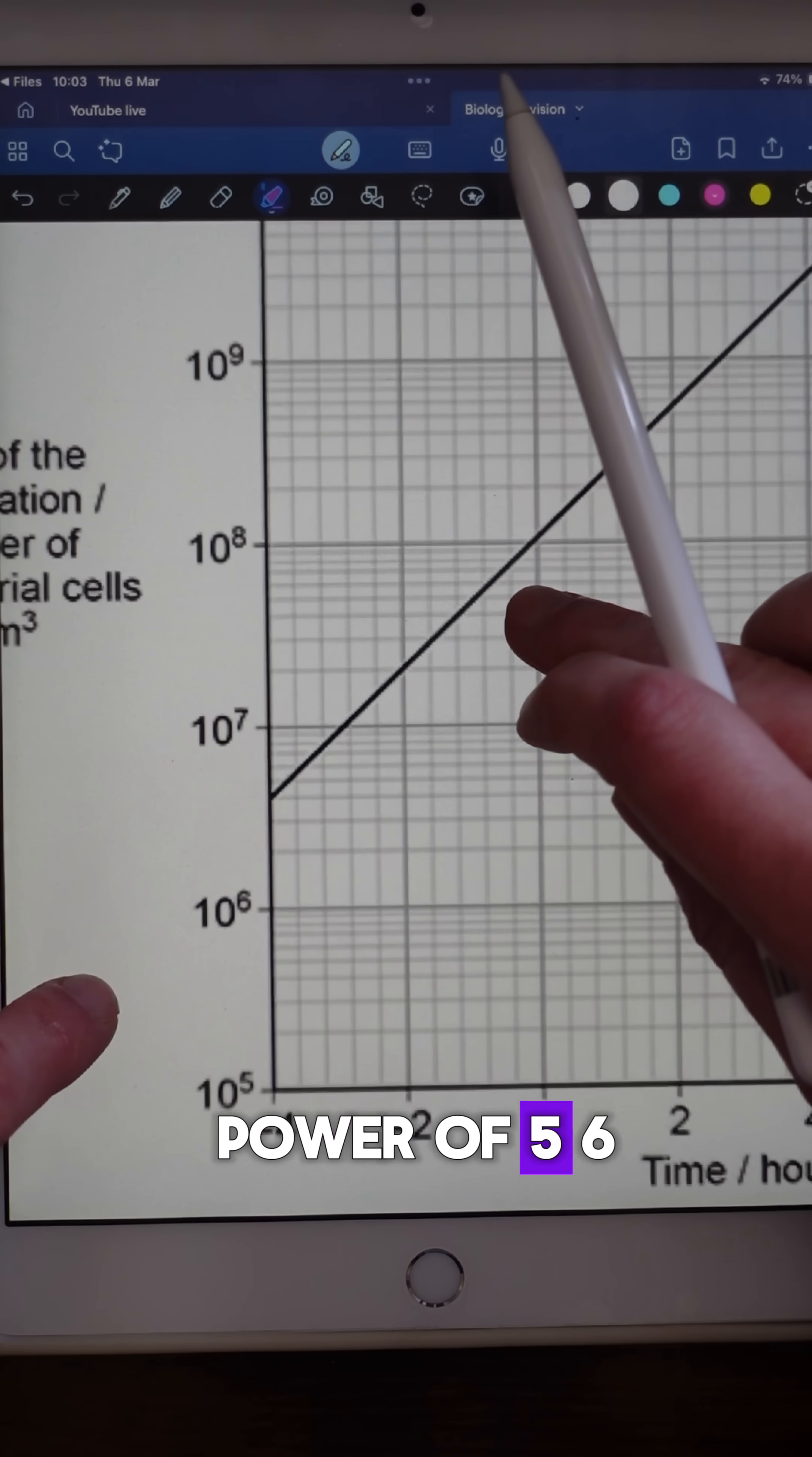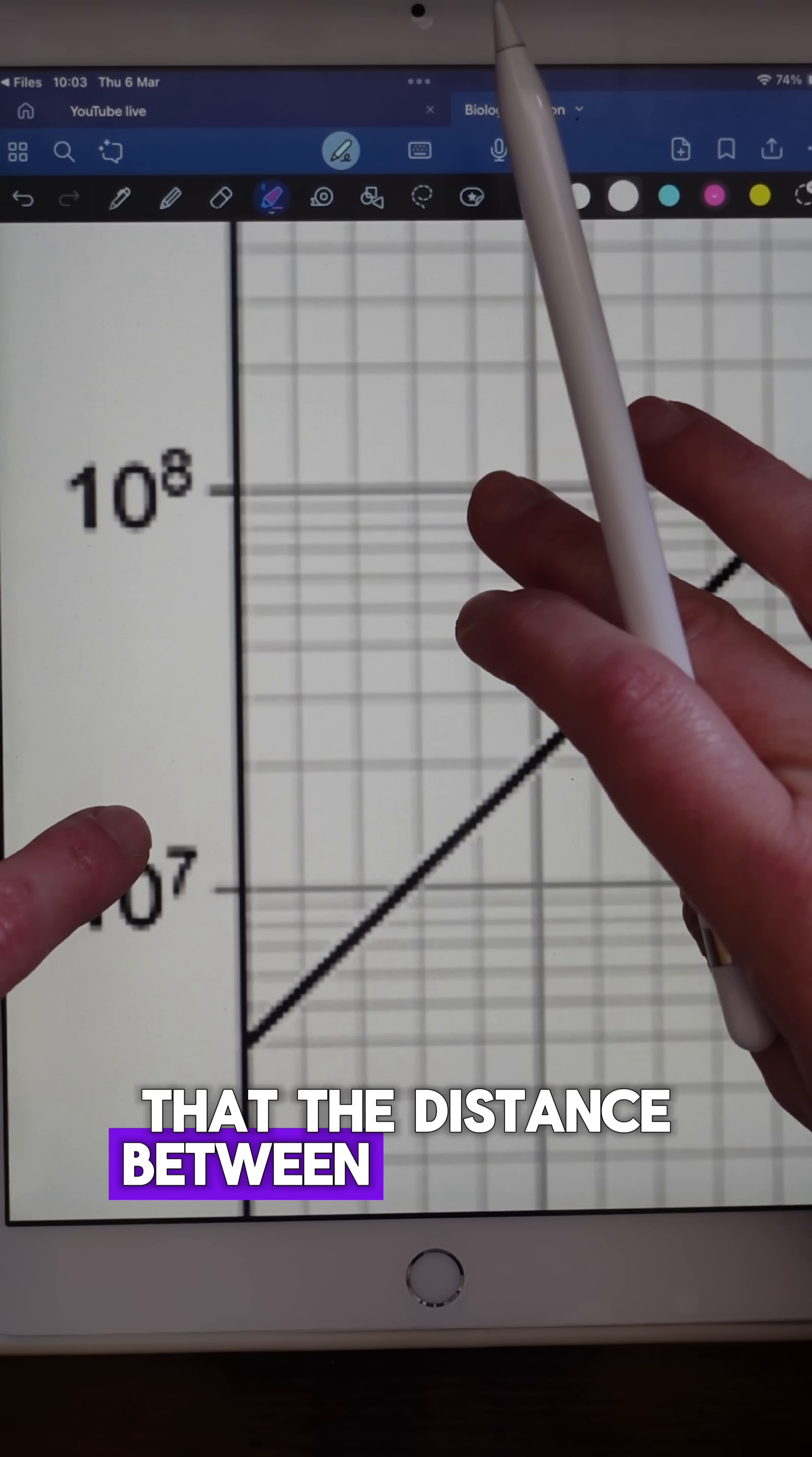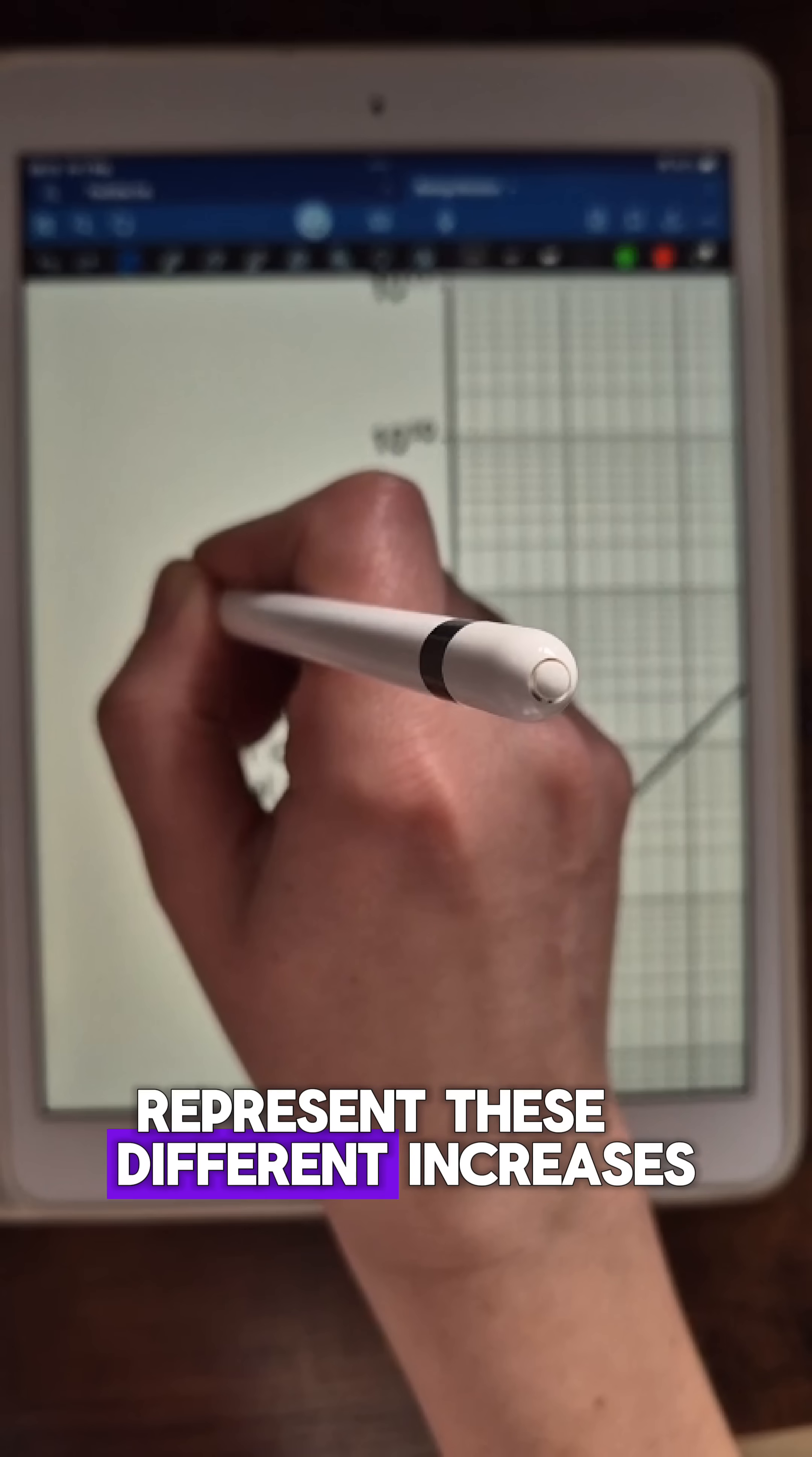So we can see here 10 to the power of 5, 6, 7, 8. You can also see that the distance between each of those lines on the y-axis is not equally distributed and that is to represent these different increases.